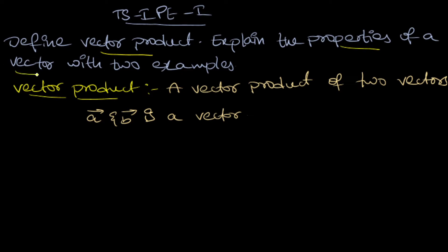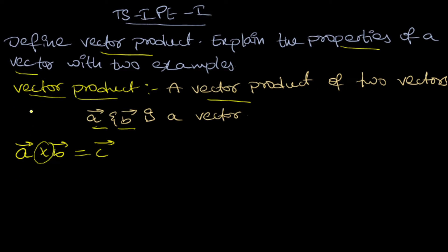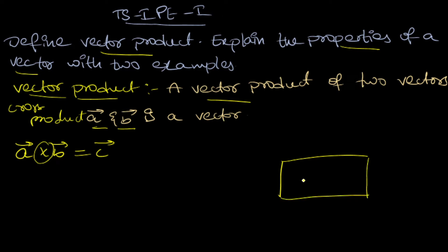What is a vector product? The vector product of two vectors A-bar and B-bar is also a vector. That is, A-bar cross B-bar also gives us a vector. Since we use the cross symbol here, this vector product is also known as the cross product. The cross product of two vectors is also a vector.